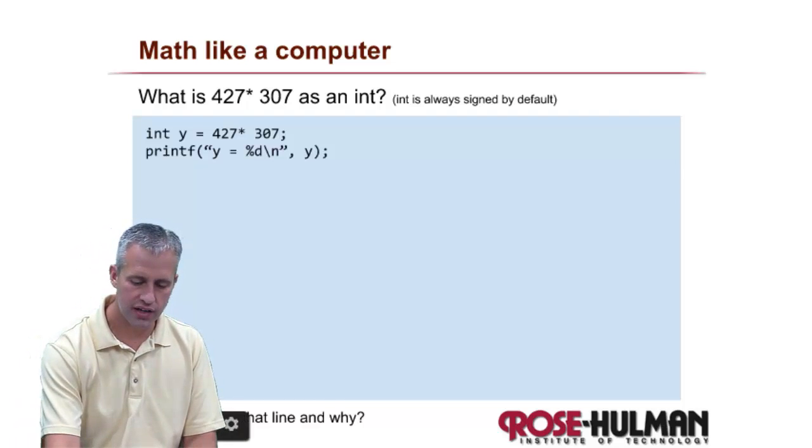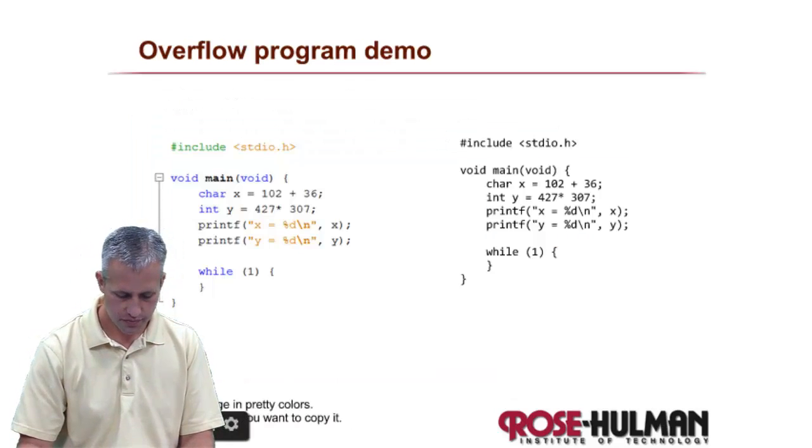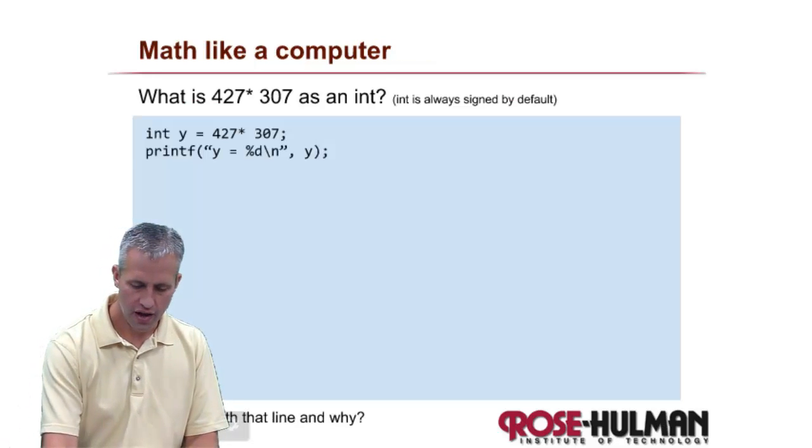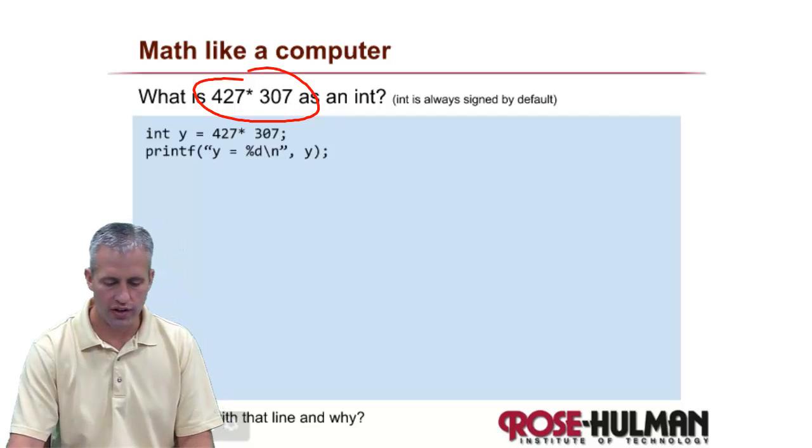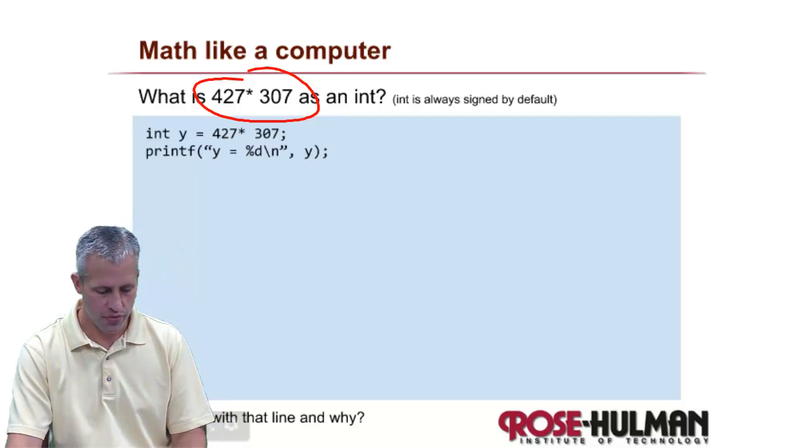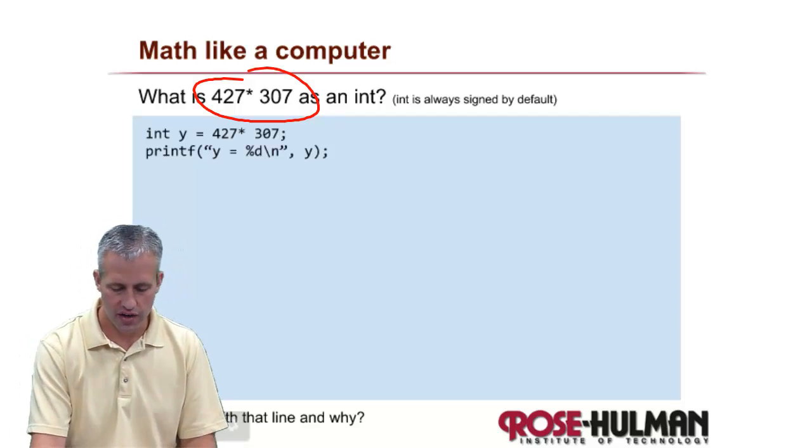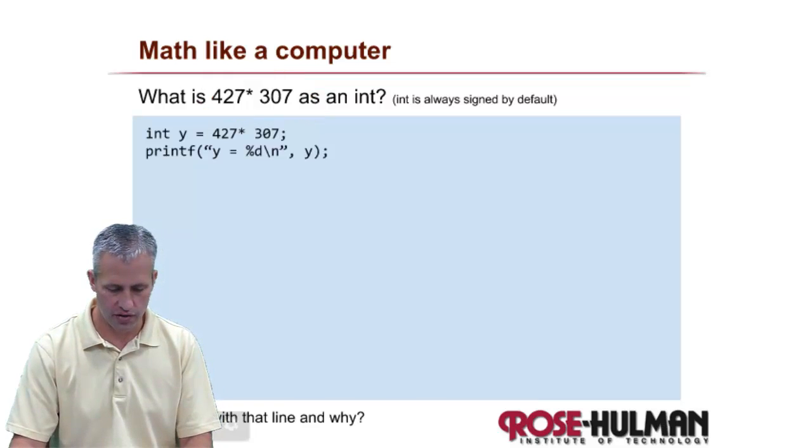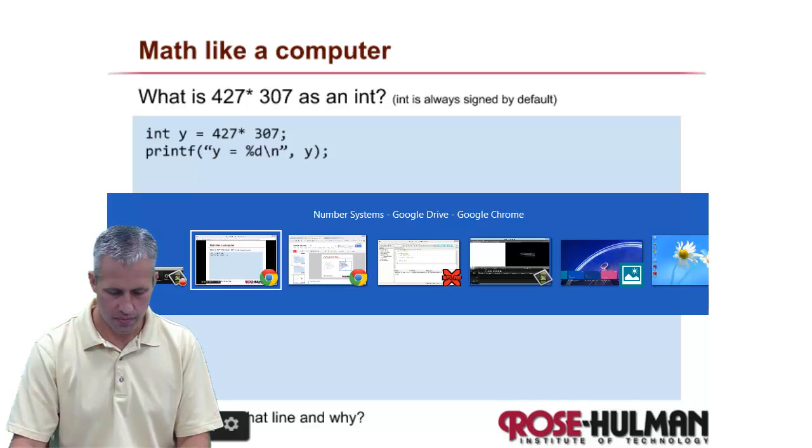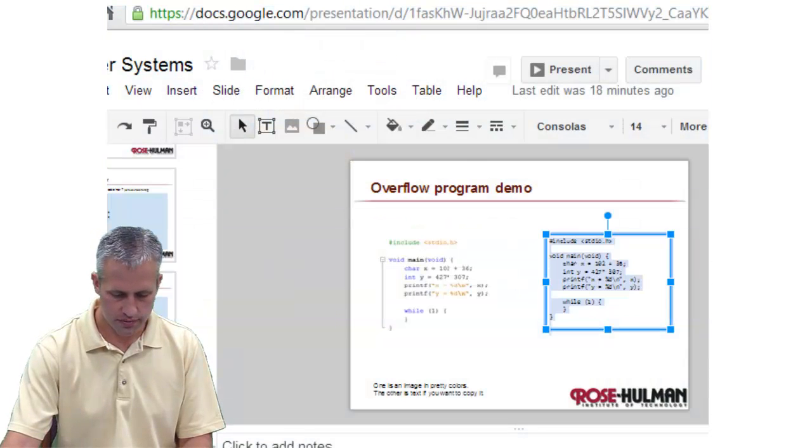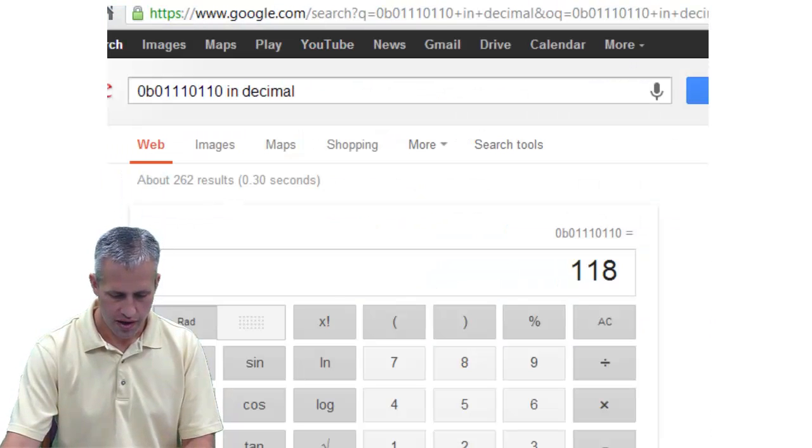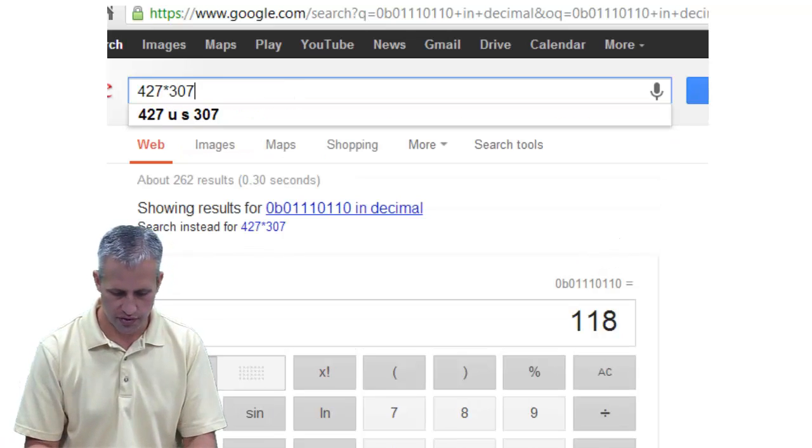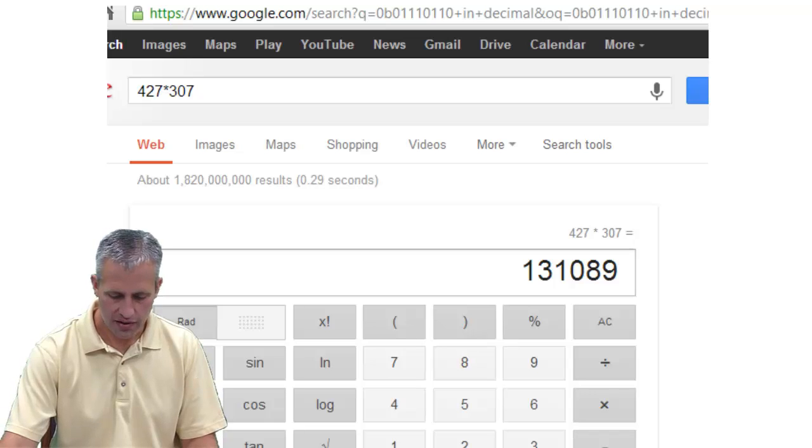But let's say we had this crazy math here. So we did the math of 427 times 307 as an integer. What do you think it is? So what I would do to try to figure this out is go to my buddy Google. And I would say, you know, first off, what is 427 times 307?